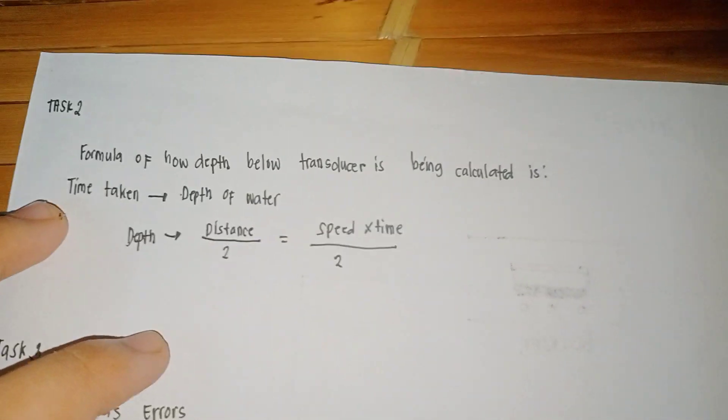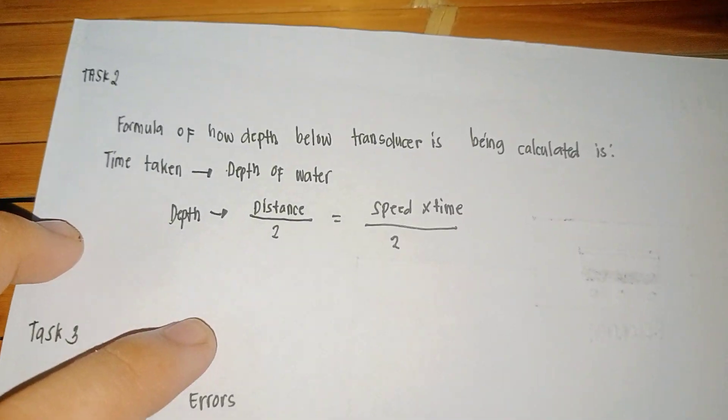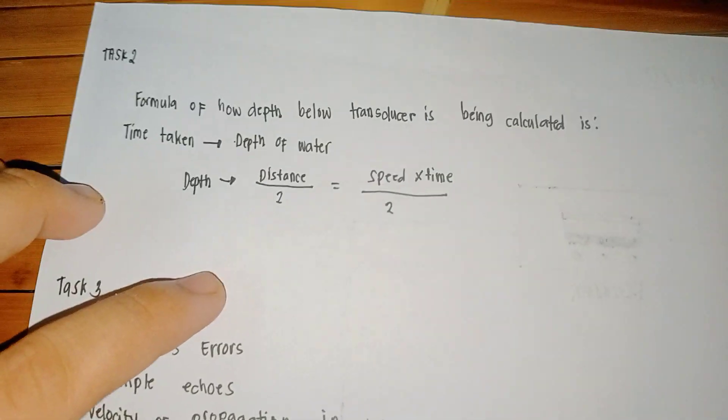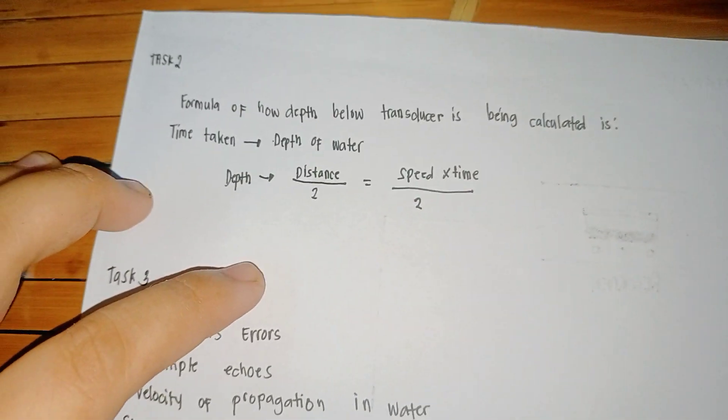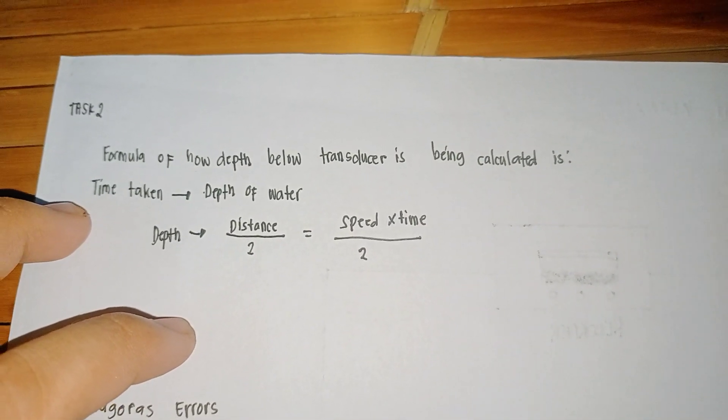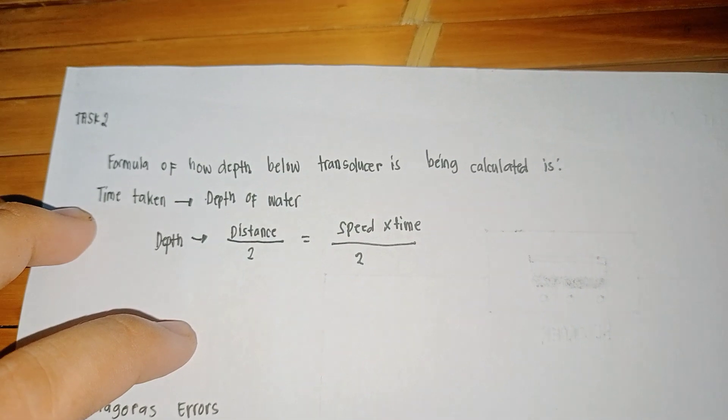In Task 2, we have to explain through illustration the formula for how the depth below the transducer is being calculated. This is our formula for how depth below the transducer is calculated.